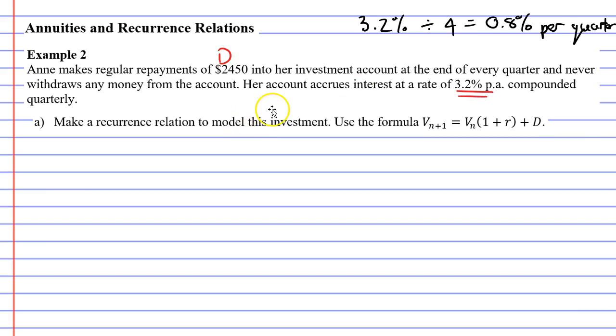So we find out that the interest rate is 0.8% per quarter rather than 3.2% per year or per annum. We also need to convert it to a decimal. To do that, we take our percentage, 0.8, and divide it by 100. This will give us 0.008. That is our value of R as a decimal rather than as a percentage.